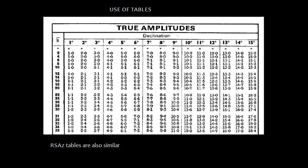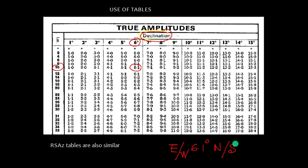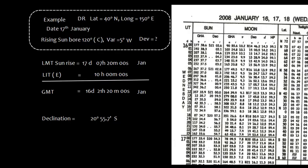Amplitude can be computed from the table itself. In the old table, given declination and latitude — for example, declination 6° and latitude 10° — you get amplitude 6.1. The naming rule: if rising, name it East; if setting, name it West. If declination is North, name it North; if South, name it South. Similarly, Rising Setting Azimuth tables are provided, and the azimuth is named N xx° E, S xx° W, or whichever combination applies.